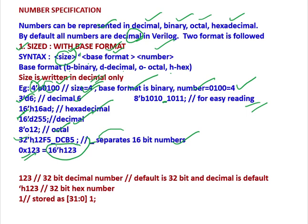If we do not include any size or base format and simply write 123, then it is a 32 bit decimal number. Because the default is decimal in Verilog. So this is a 32 bit decimal number.